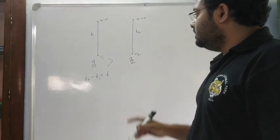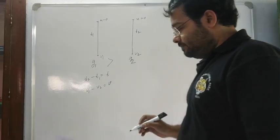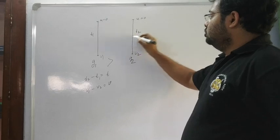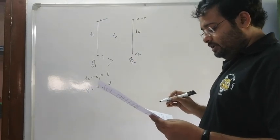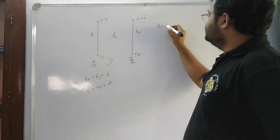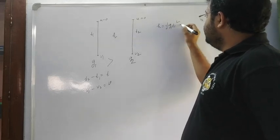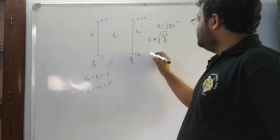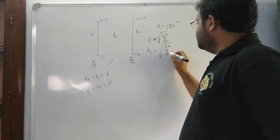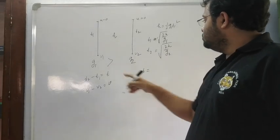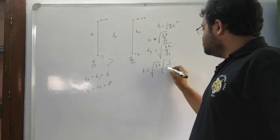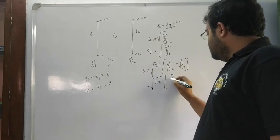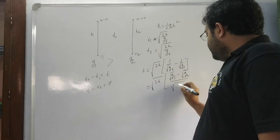Since g1 is greater than g2, we have h equal to half g1 t1 squared. So t1 is equal to root over 2h by g1. Similarly, t2 is equal to root over 2h by g2. So t equals root over 2h times root g1 minus root g2, whole divided by root over g1 g2.